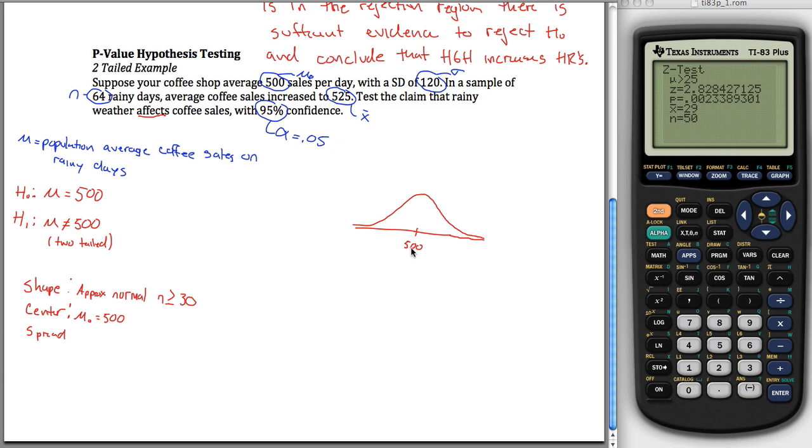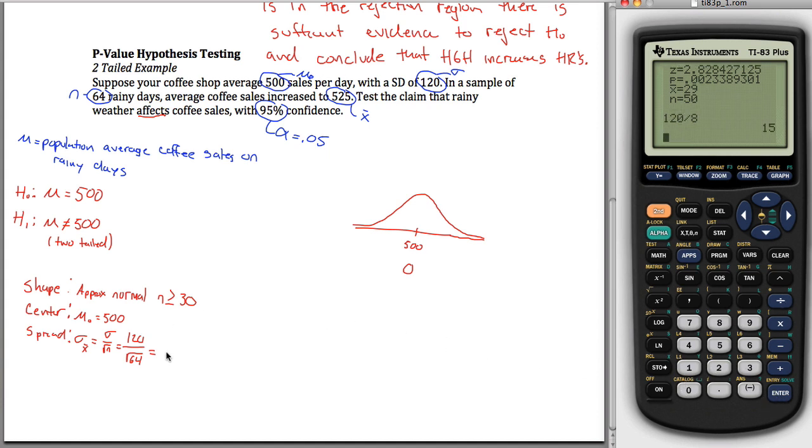And again, we're going to want to know both x values and z values. So maybe I'll put a zero down here. This is the x value, this is the z value. So our spread, again, just like above, we're going to use the standard deviation of the sampling distribution, which is sigma over root n, which in this case is, sigma was 120, and n was 64. So that's 120 divided by 8, which is 15, 16, oh, I better do it on a calculator. 120 divided by 8 is equal to 15, might have been what I said, I don't remember. Shape, center, spread, nice. Now we can draw our picture.